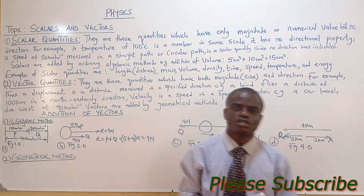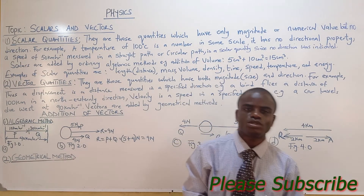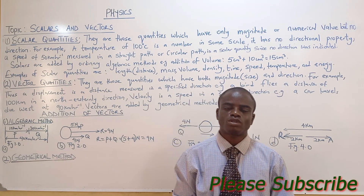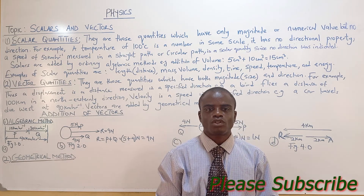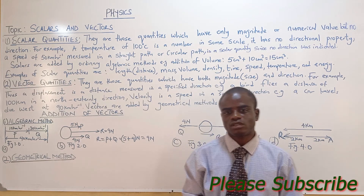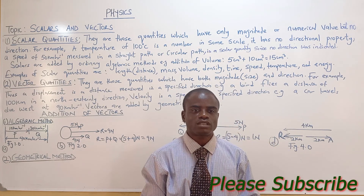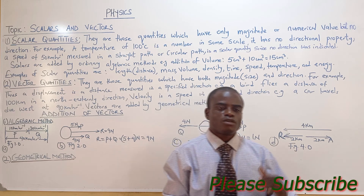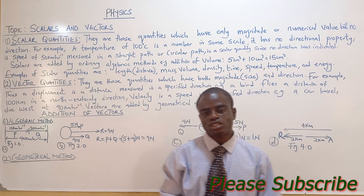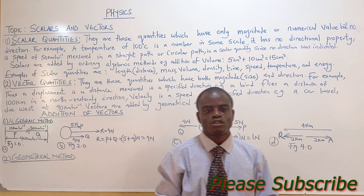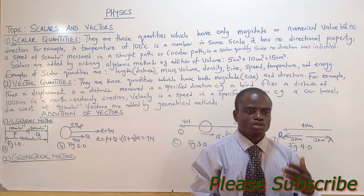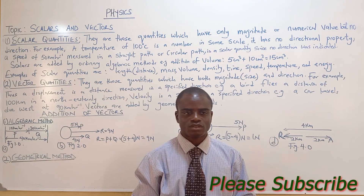Good day students. Today we are discussing the topic titled Scalar and Vector Quantities. Vector quantities are different from scalar quantities in the sense that scalar quantities have only magnitude but no direction, while vector quantities have both magnitude and direction.